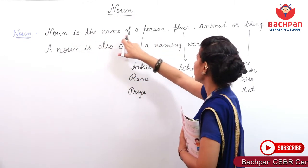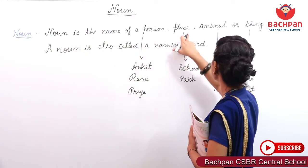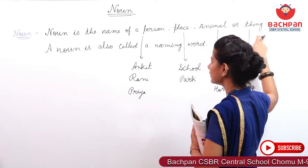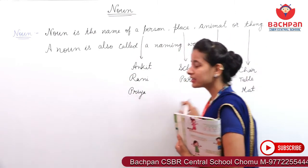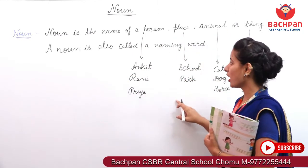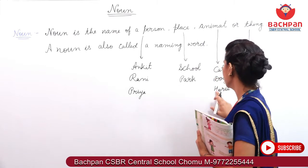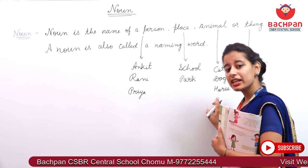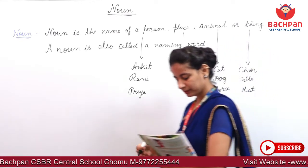Toh noun is the name of a person, place, animal, or thing. Aur in sab ko apan kya bol sakti hai? A noun is called a naming word. Aap in ko kya bol sakti hai? Naming word bhi bol sakti hai.